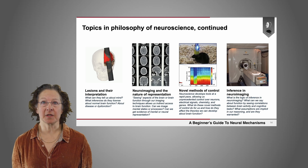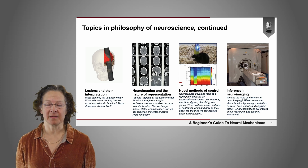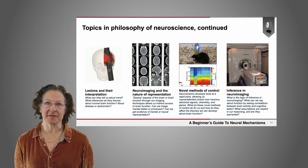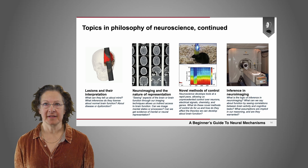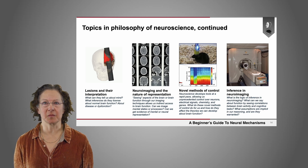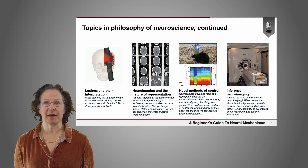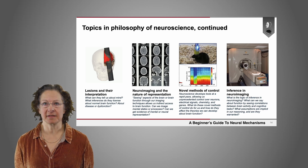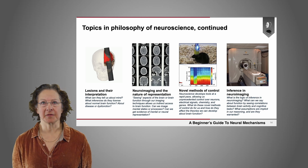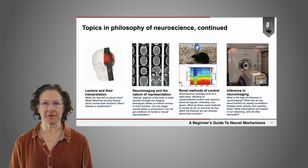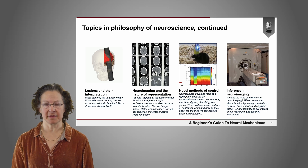For instance, does the brain work the same way when you're doing hypothetical tasks in a scanner as opposed to when you're faced with a situation in the real world? We make these kinds of inferences to try to understand what people do and how brains function in the real world, but the contexts are clearly different. So there are lots of questions about how to interpret neuroimaging that philosophers of neuroscience think about.